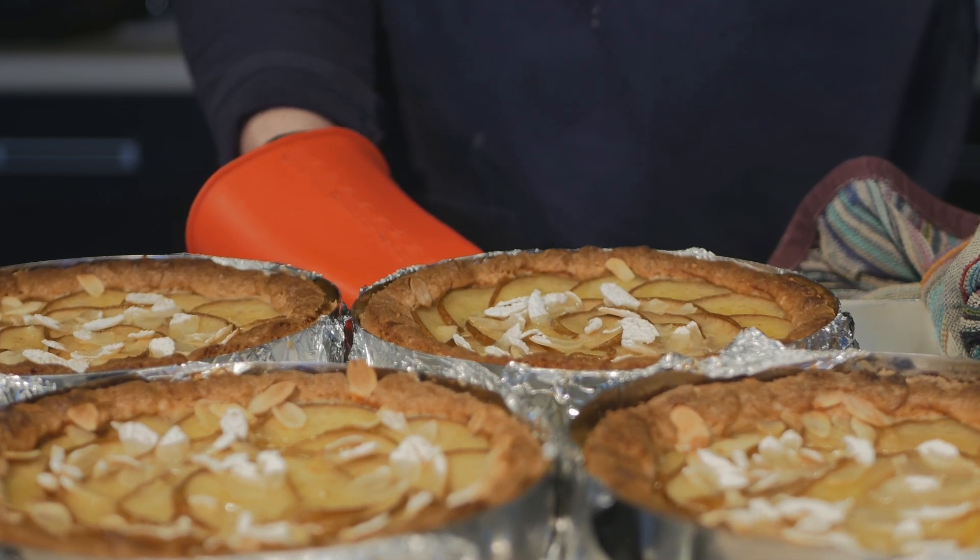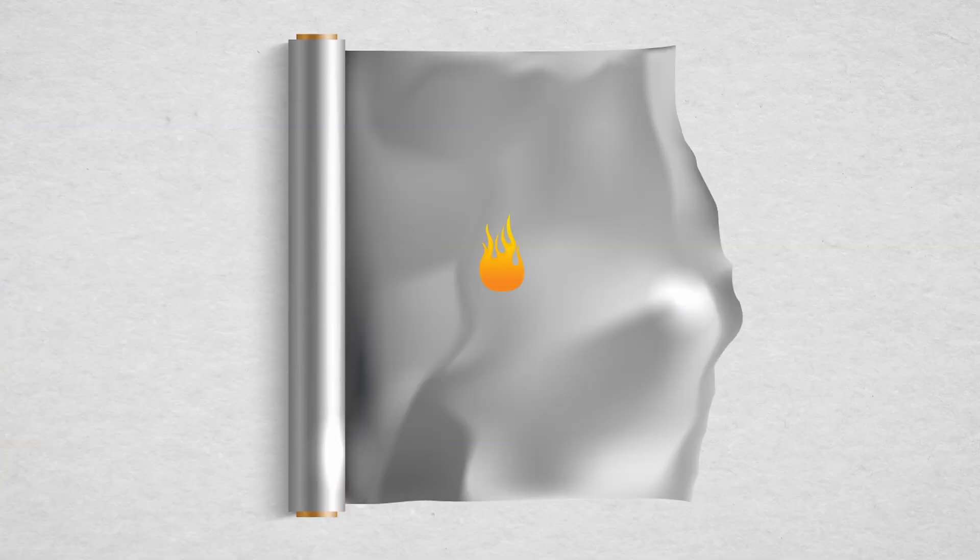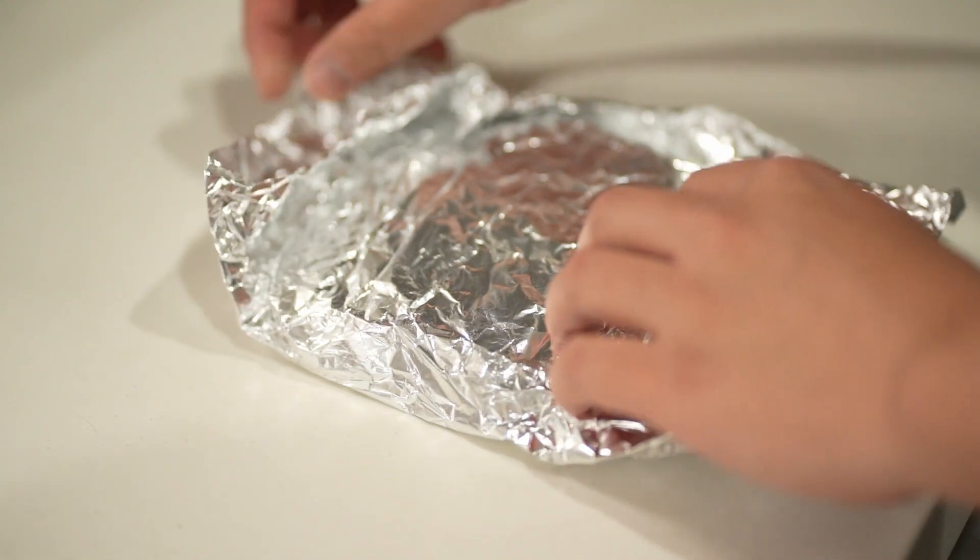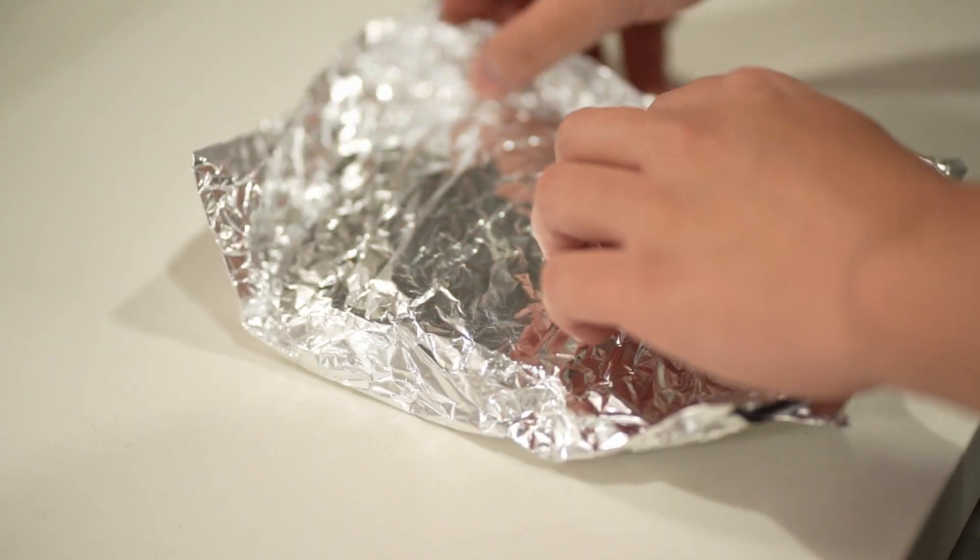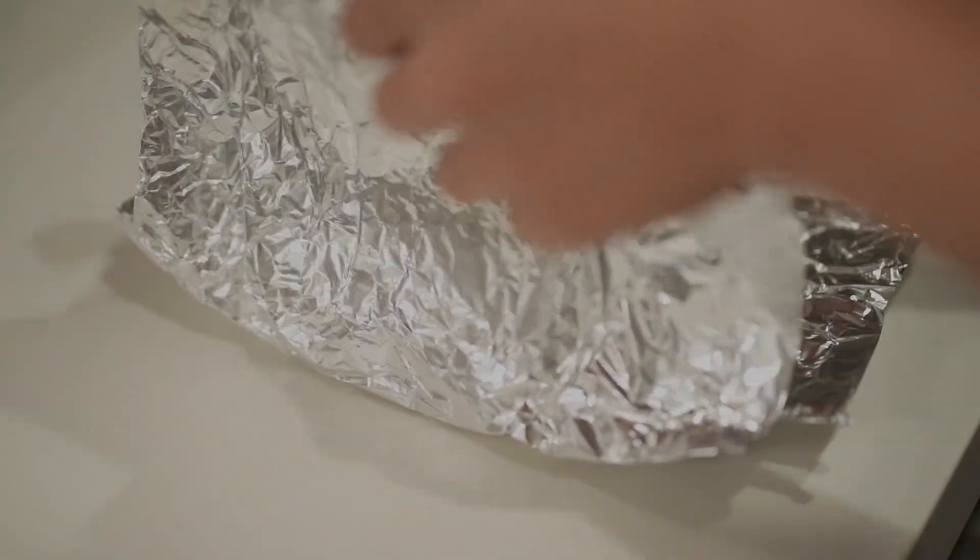In essence, aluminum foil doesn't feel hot after being removed from the oven because it rapidly dissipates its heat to the surrounding air, and what little heat it retains is insufficient to affect, let alone scald, your entire hand.